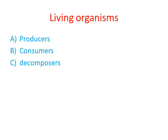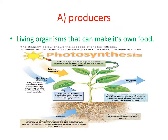We have three types of living organisms: producers, consumers, and decomposers. The producers are the living organisms that can make their own food, like plants. All green plants can make their own food, so they are called producers or autotrophic.